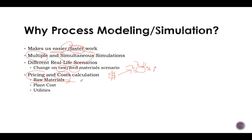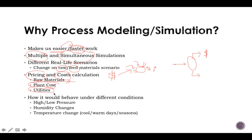And pricing, so if we change raw materials, you already know what are the final products and prices. You can already have an approximate amount of how much it's going to cost for utilities, for the raw materials and the plant costs.